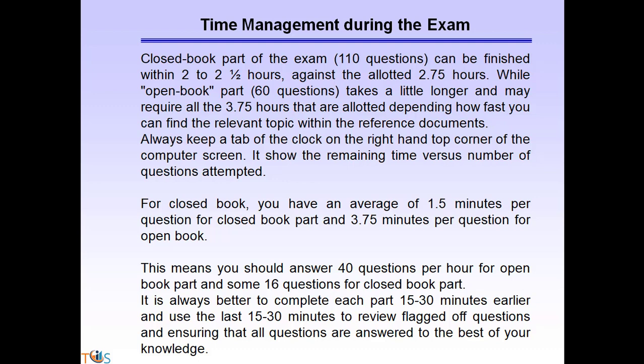How should you manage your time during the exam? For the closed book part — 110 questions — you are allocated 2.75 hours, but we believe you can finish it within two to two-and-a-half hours. For the open book part — 60 questions — you have 3.75 hours. Keep a tab on the clock in the top right corner of the computer screen. For closed book you have an average of 1.5 minutes per question; for open book you have 3.75 minutes per question — meaning 40 questions per hour for open book and 16 questions per hour for closed book.